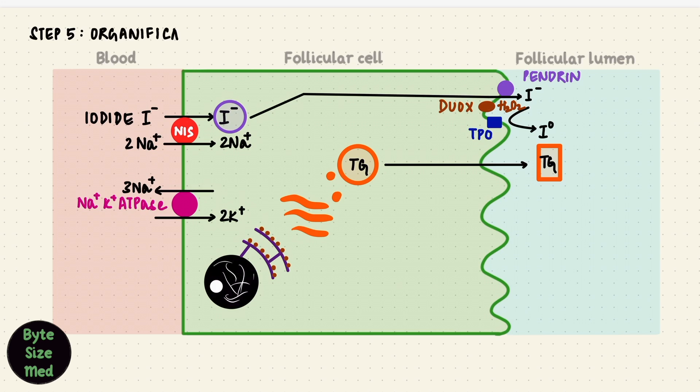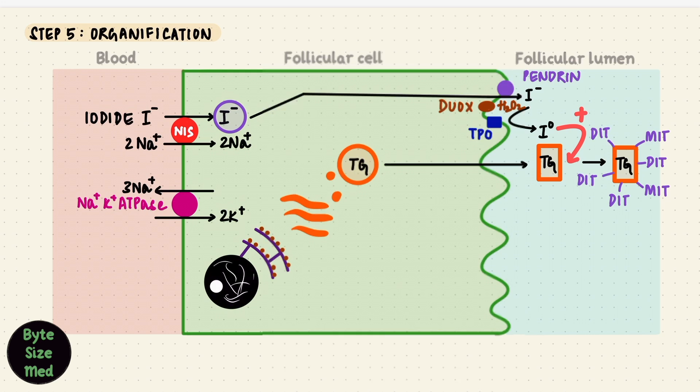Step 5 is the organification of thyroglobulin. So now the two ingredients needed for the synthesis of the thyroid hormone, that's iodine and tyrosine, are in the colloid. Organification would just be a fancy way of saying we're going to add the iodine to the thyroglobulin. With one molecule of iodine, we form monoiodotyrosine. With two that's diiodotyrosine, MIT and DIT, and they stay attached to the thyroglobulin molecule. Again, this step needs thyroid peroxidase, as does the next step.